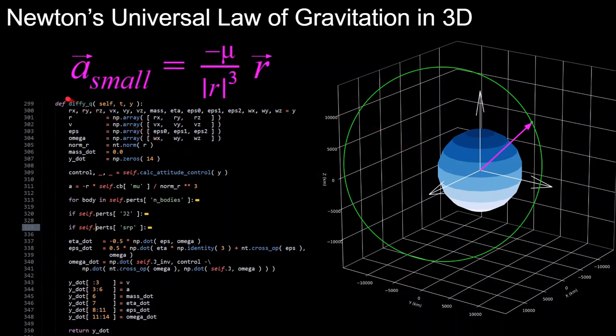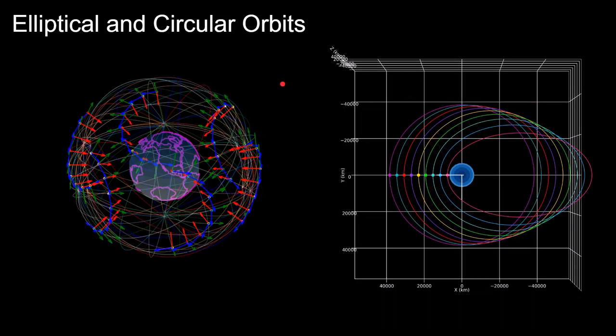So this is the differential equation that I have in the Python software. And I have a lot of other stuff because this also accounts for attitude control. But if we're just looking at the 3D motion of the orbit, here is the fundamental equation right here, with the acceleration of the spacecraft is equal to negative r, the position, times the central body mu value divided by the norm of that r vector cubed.